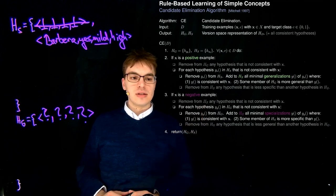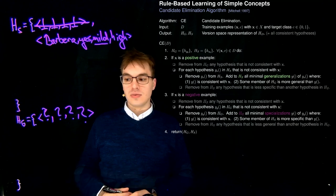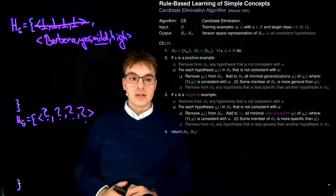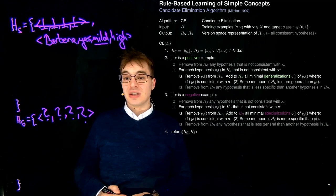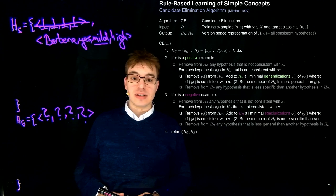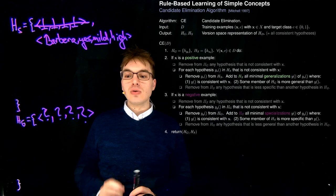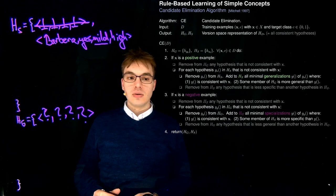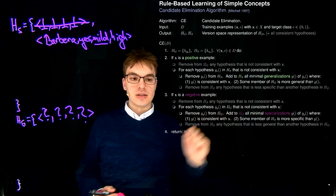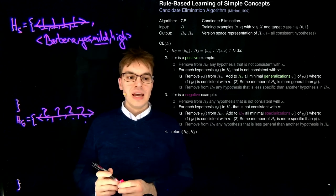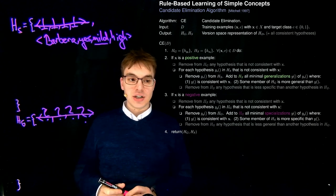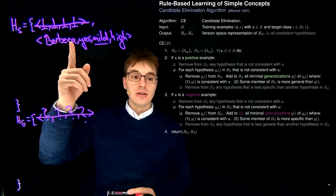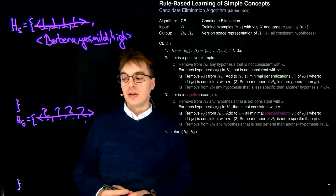For each hypothesis in HG that is not consistent with X: this one is not consistent because it admits our current example due to all the wild cards, but we don't want it to admit a non-award-winning wine. So we have non-consistency and we remove it. Then we add all minimal specializations where we have consistency, where some member of HS is more specific than the hypothesis we add.